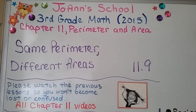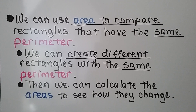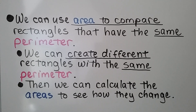Lesson 11.9. We're going to talk about same perimeter and different areas for rectangles. We can use area to compare rectangles that have the same perimeter. We can create different rectangles with the same perimeter, then calculate the areas to see how they change.